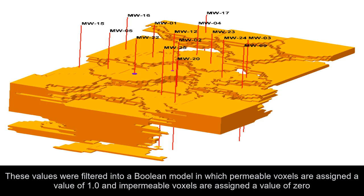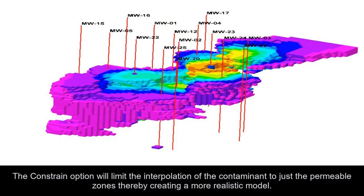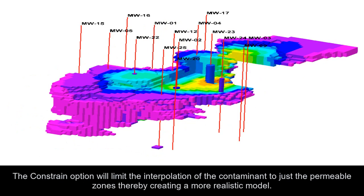The constraint option will limit the interpolation of the contaminant to just the permeable zones, thereby creating a more realistic model.